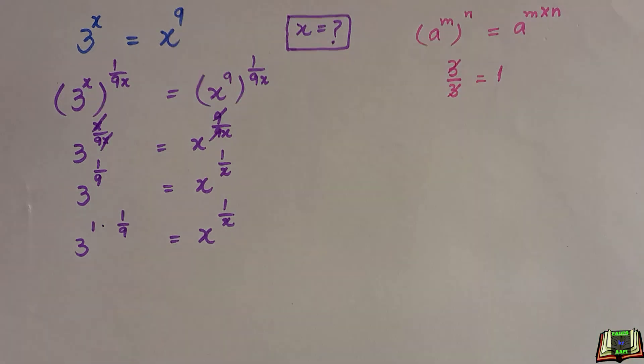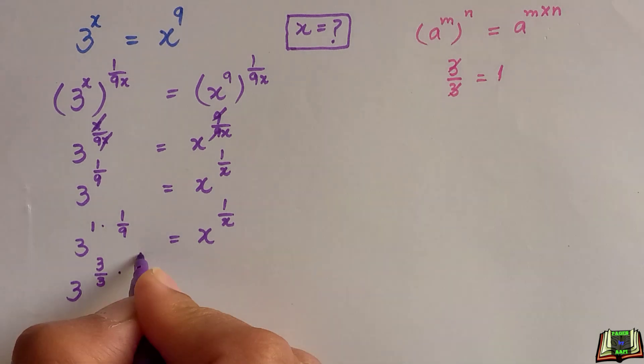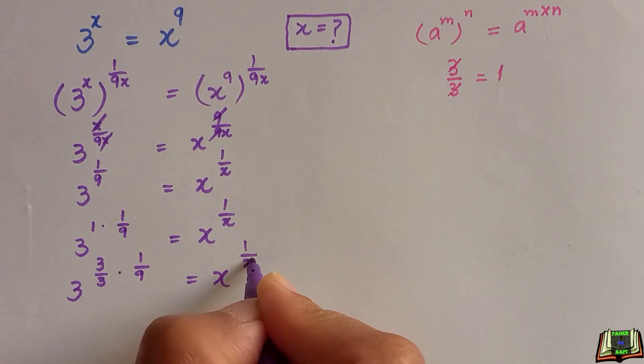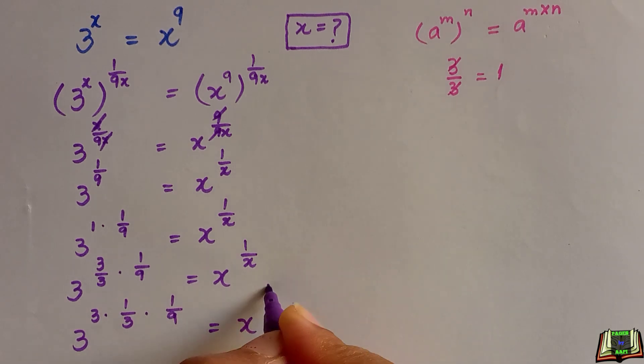Because 3 and 3 will cancel out, it is equal to 1. So we can write 1 as 3 over 3 times 1 over 9, which is also equal to 3 raised to power 1 over 3 times 1 over 9, equal to x raised to power 1 over x.